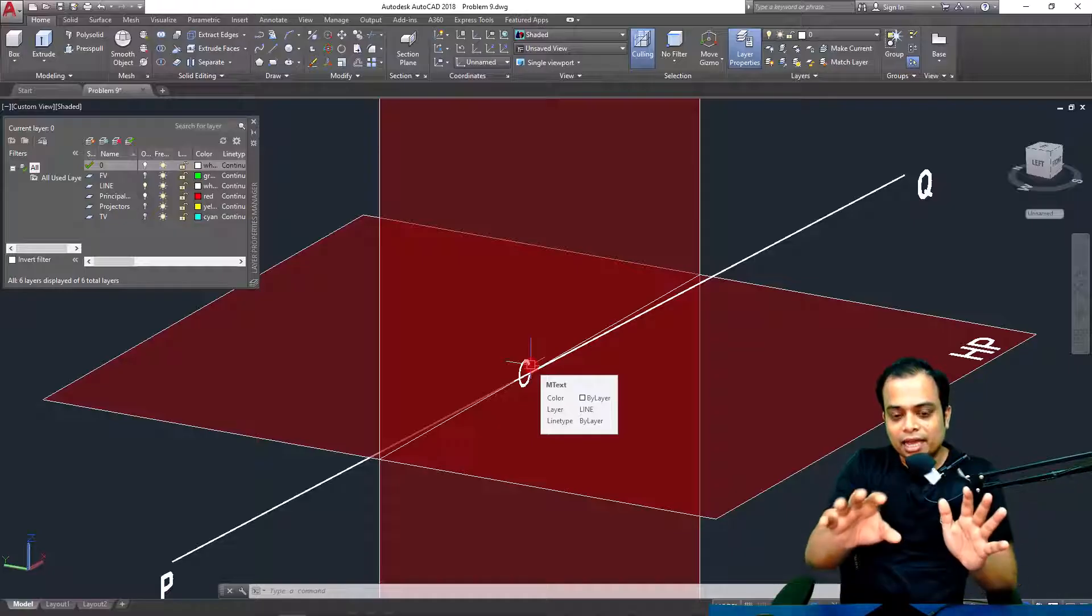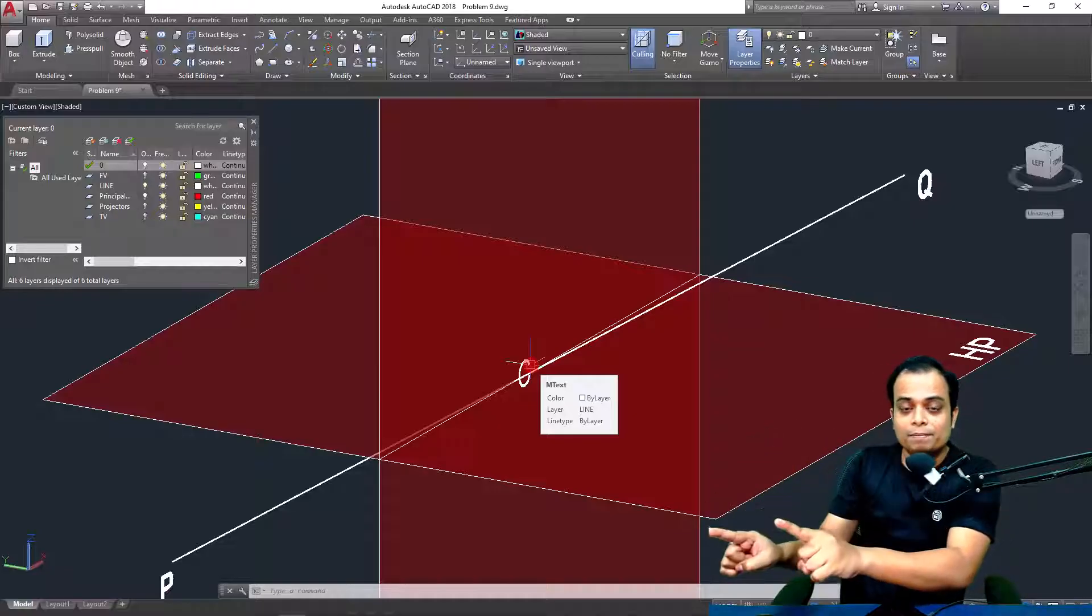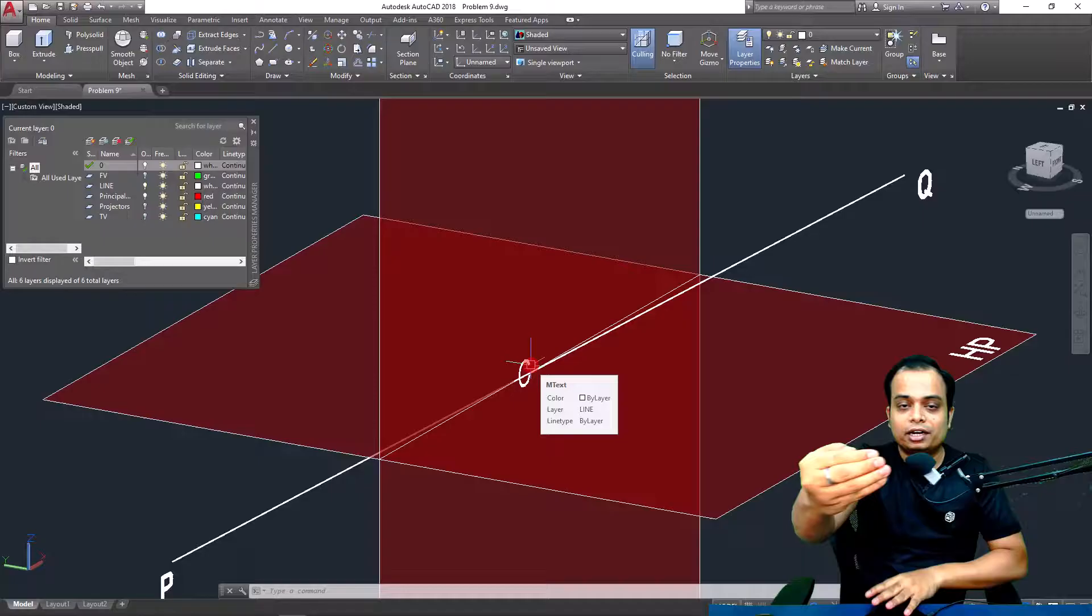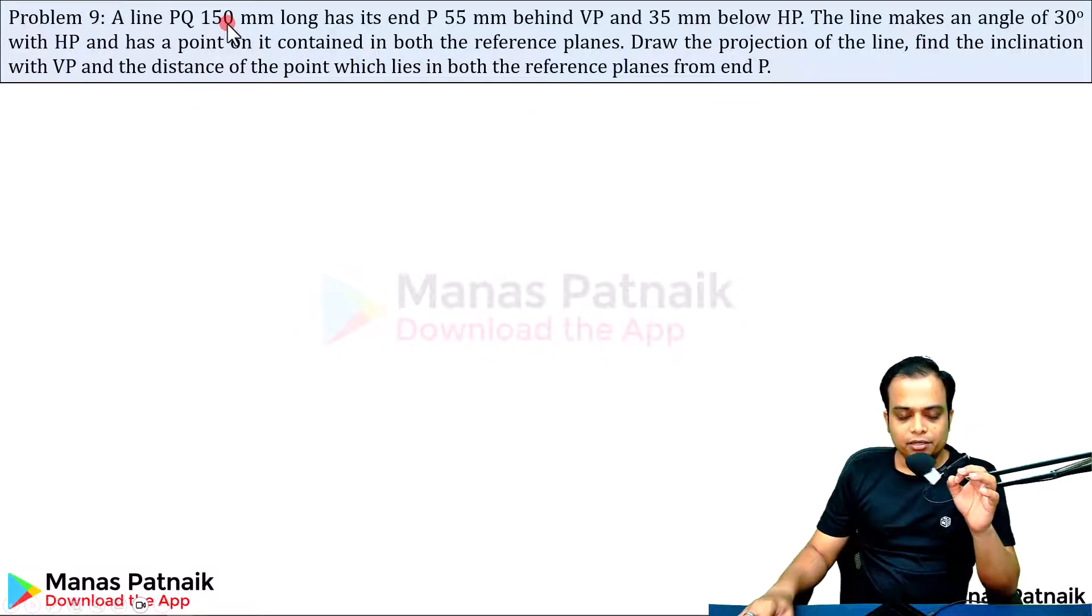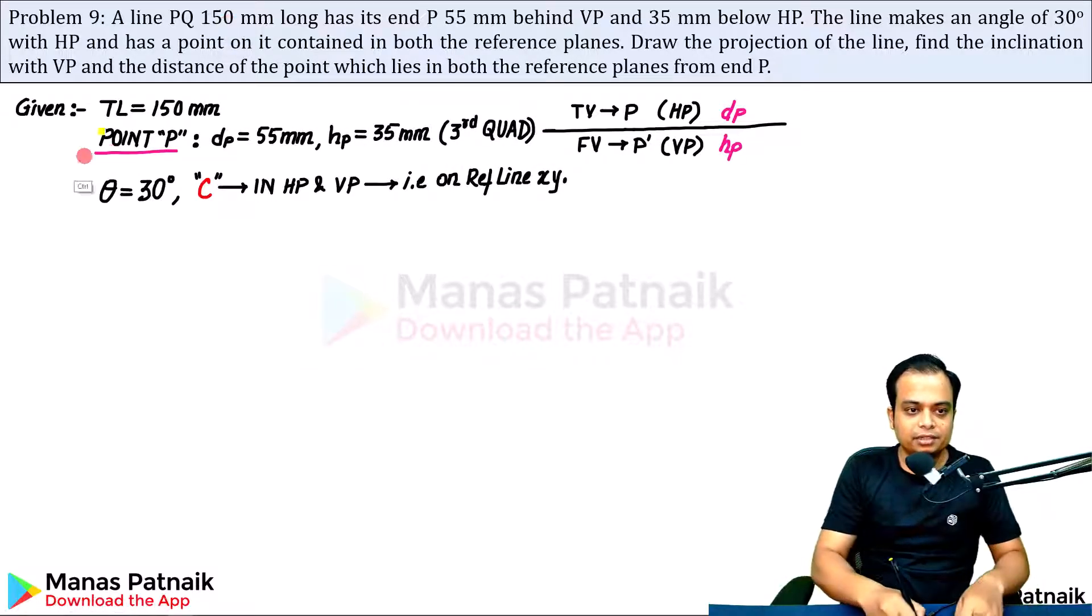I'll give you the details. We are going to take a look at the projections in 3D first and then solve this problem on Microsoft PowerPoint. You can replicate the same on a piece of paper. A line PQ 150 millimeters long. The true length of the line is 150 millimeters.